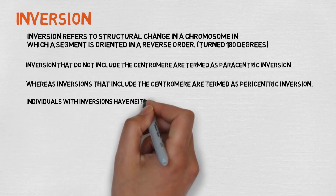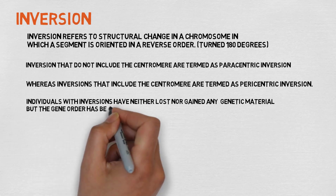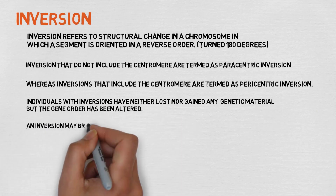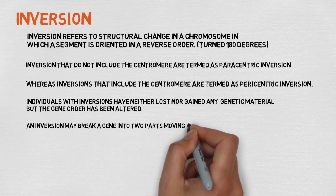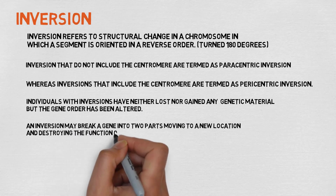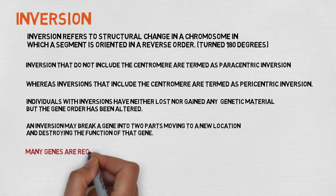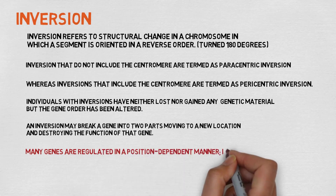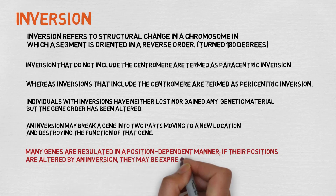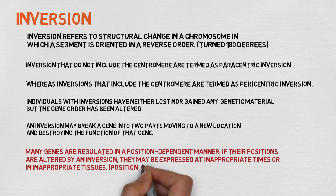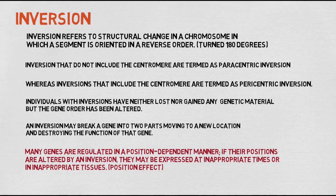In inversion, the individual neither loses nor gains genetic material — there is no loss and no gain, the total gene pool is the same. However, when the inversion takes place, a segment of the chromosome must break out. If a gene is present at the breakpoint, the function of that particular gene gets disrupted. Also, inverting the sequence means the gene reading sequence can be disturbed, and the protein that reads it can be affected.